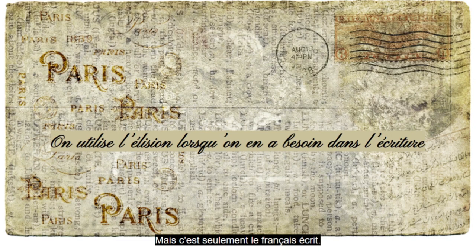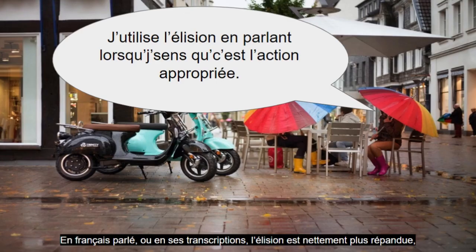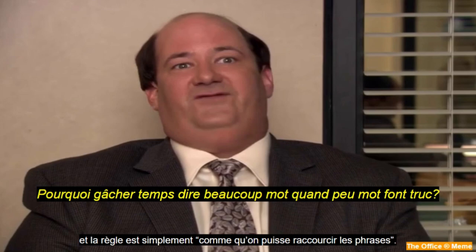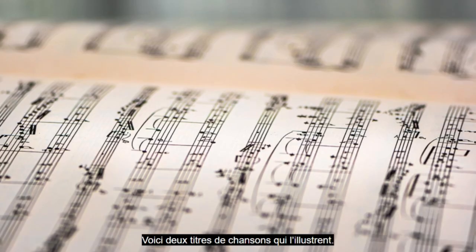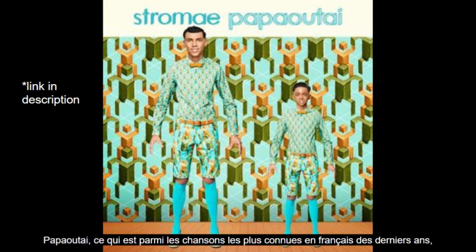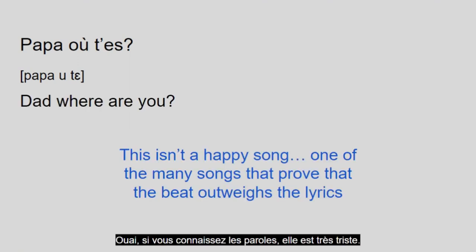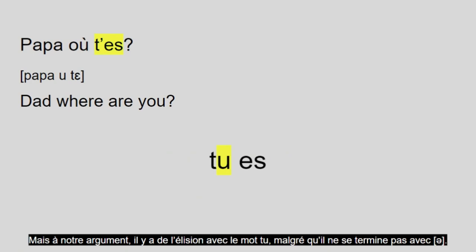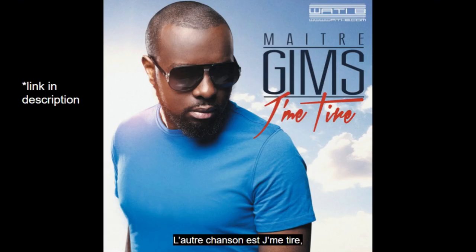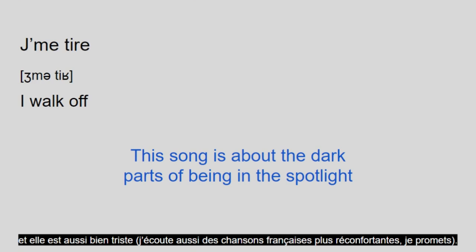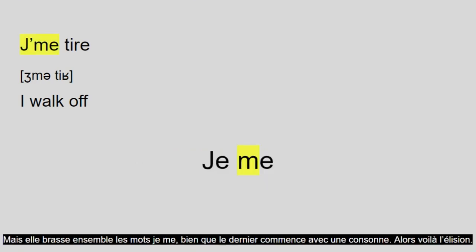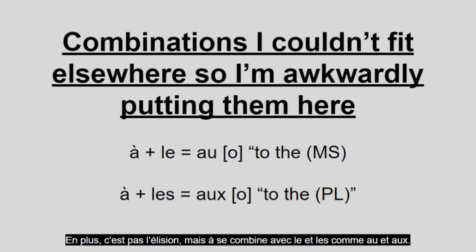That's just written French, though. In spoken French, or transcriptions of it, elision is much more widespread, and the rule is basically just however you can shorten your sentences. Here are two song titles that exemplify this. Papa où t'es, which is one of the most famous French-language songs of recent years, isn't actually one word — it's three: Papa où t'es, meaning 'Dad, where are you?' There's elision with the word tu, despite it not ending with E. The other song is j'me tire, and it smashes together the words je me even with the latter starting with a consonant. Also, it's not elision, but à combines with le and les as au and aux.